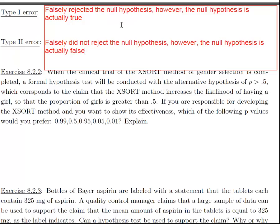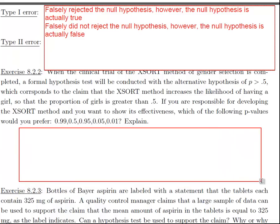Let's finish up this section with a couple problems, and then we'll move on to the next section. Exercise 8.2.2 says: When the clinical trial, the XSORT method of gender selection, remember that's the problem they love in this book, where they try to specify what gender your child's going to be. A formal hypothesis test was conducted. An alternative hypothesis was the proportion of girls is greater than 0.5, meaning that this XSORT method would increase the likelihood of having a girl. If you are responsible for developing the XSORT method, would you prefer a p-value of 0.99, 0.5, and then it goes all the way down to 0.01.